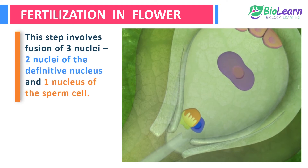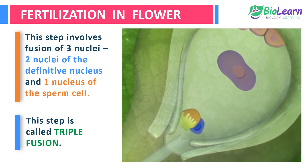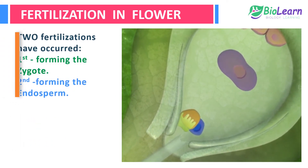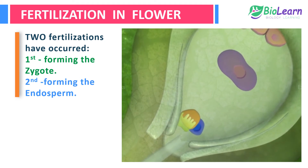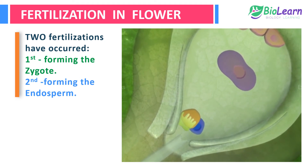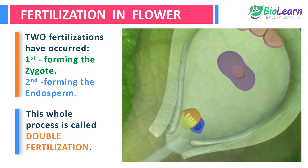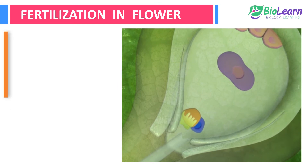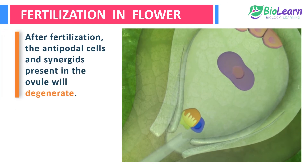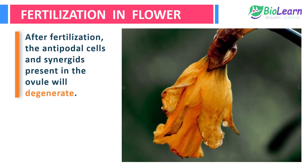This step involves the fusion of three nuclei — the two nuclei of the definitive nucleus and one nucleus of the sperm cell — hence this step alone is called triple fusion. Overall, two fertilizations have occurred: the first fertilization forming the zygote, and the second fertilization forming the endosperm. Hence this whole process is termed double fertilization.